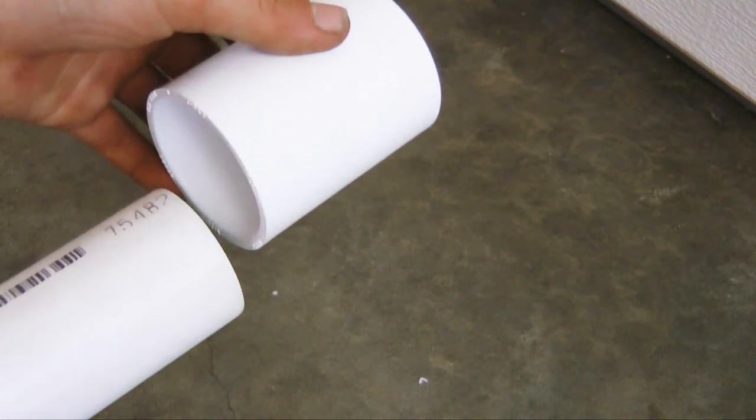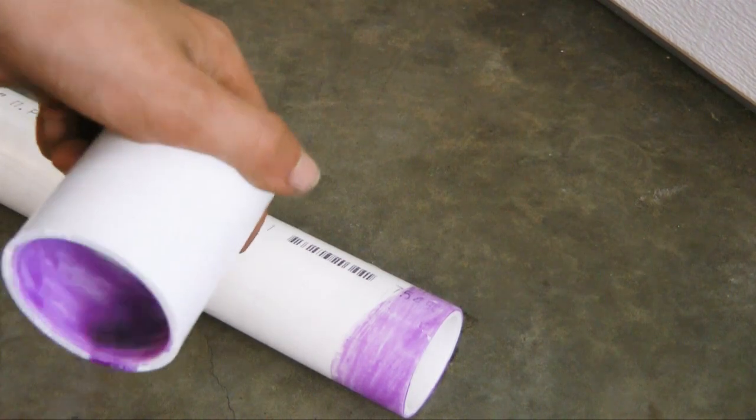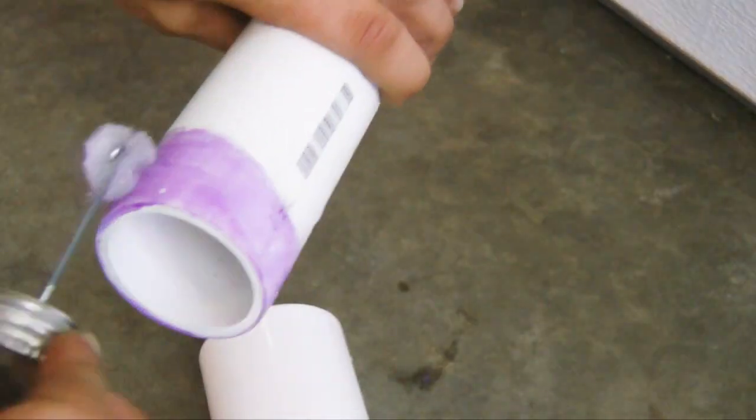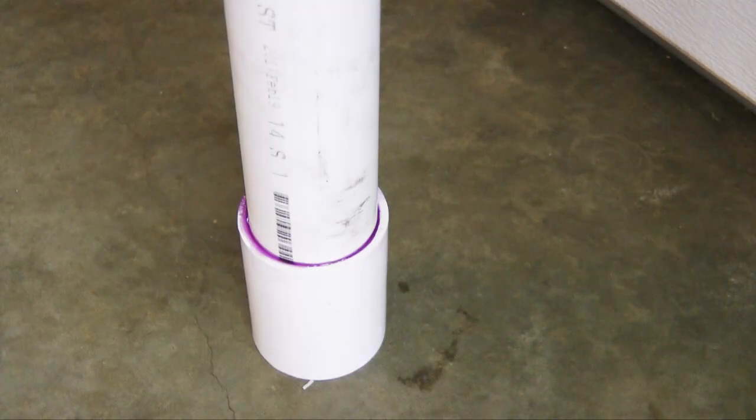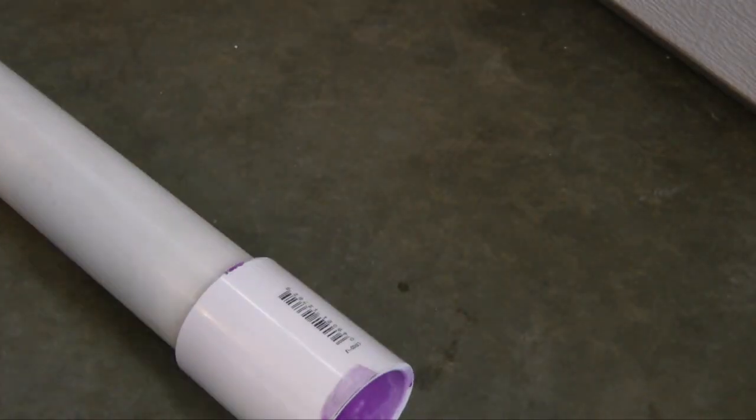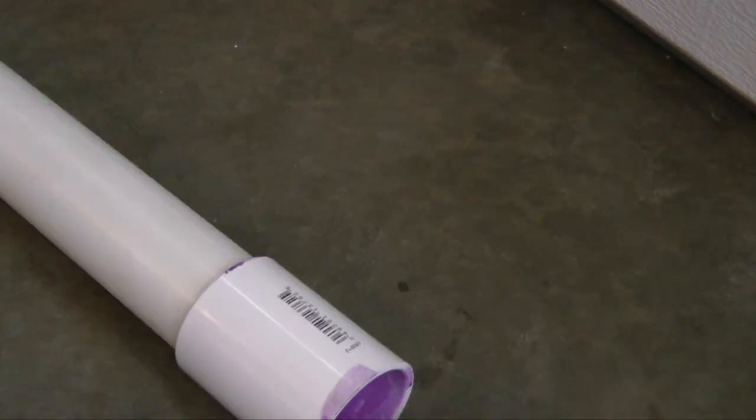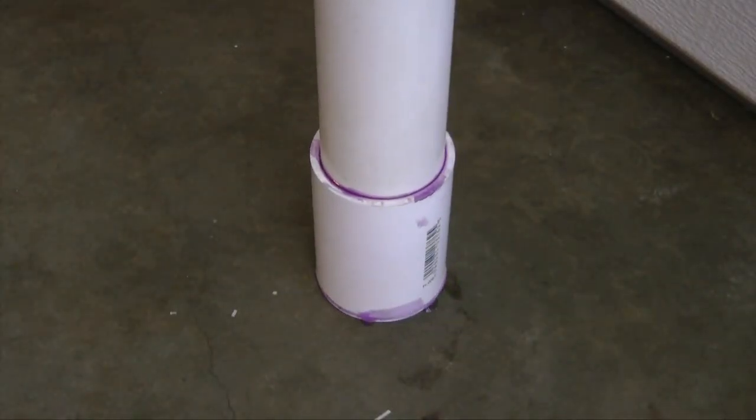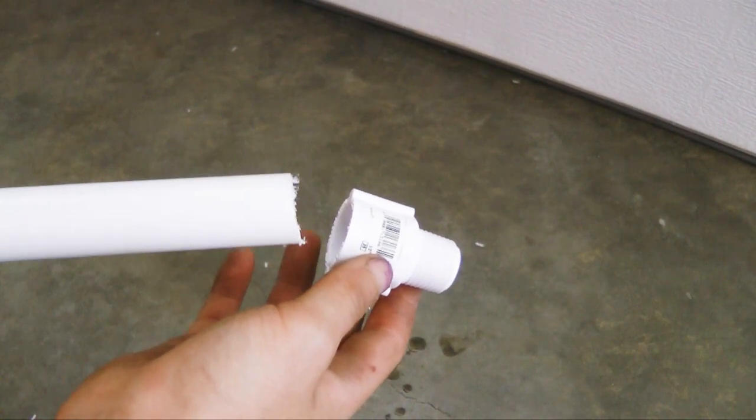Now we need to glue on the coupler to the PVC tube. Glue the coupler onto the PVC tube.